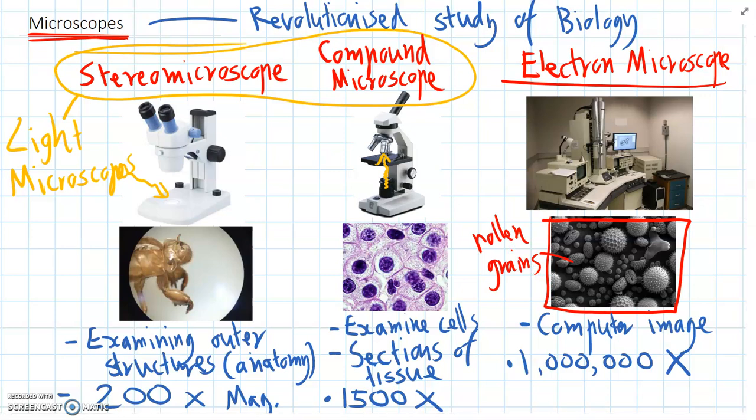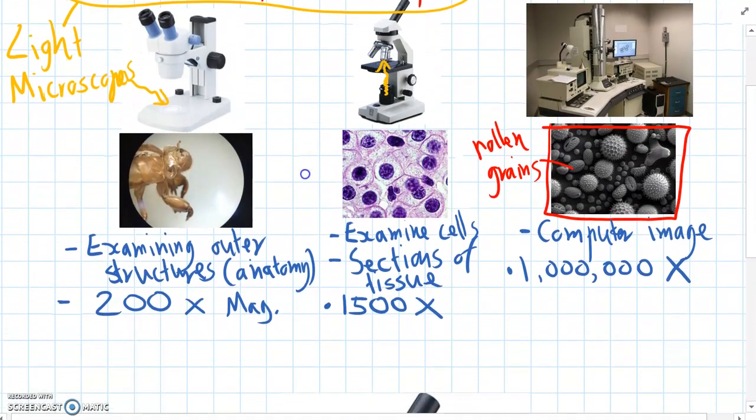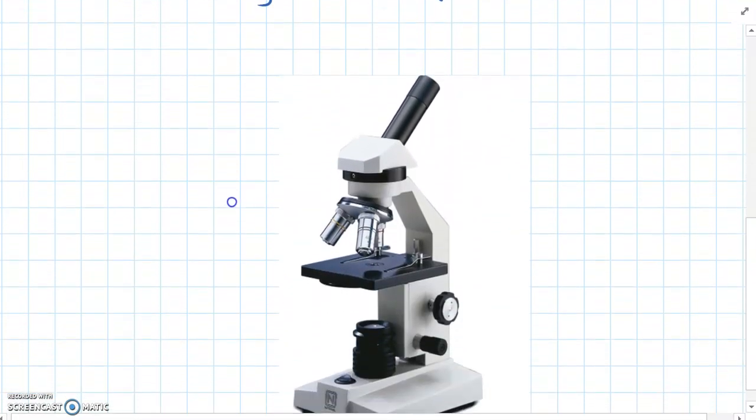So when we're in the lab the most common microscope we'll use to look at living things is the compound microscope.